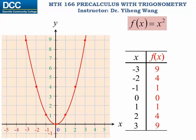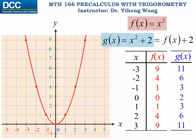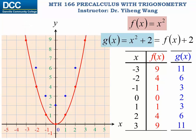Now if we want to sketch a new function g which equals x squared plus 2, we notice how it is related to the given f function — it is simply f plus 2. If we use the point plotting method again to sketch the g function, all we need to do is add 2 to the f function values. When we plot the new solution points, we just move all the existing solution points up by 2 units, and this is the graph for g(x) — simply the graph of f shifted upward by 2 units.